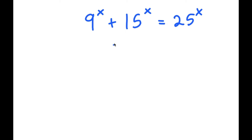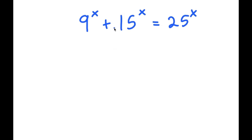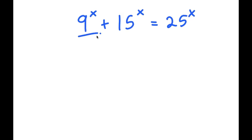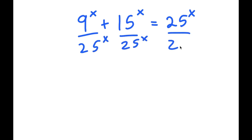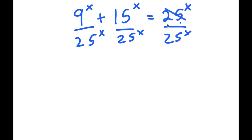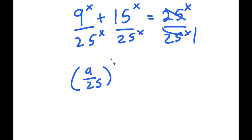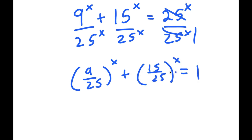I'm going to first start by dividing every term by 25 to the power of x. These two cancel out to get 1, so now I have 9 over 25 to the power of x plus 15 over 25 to the power of x is equal to 1.